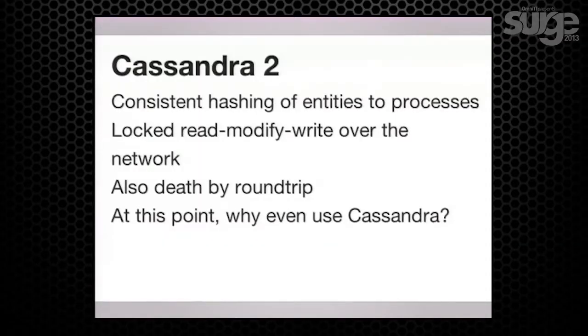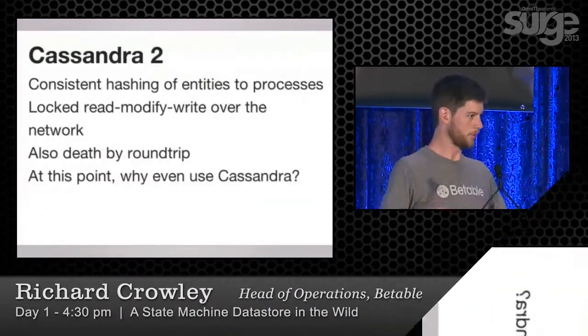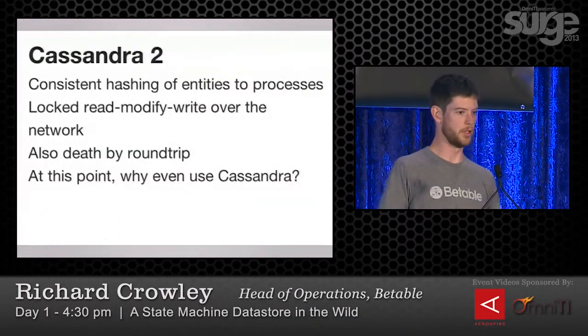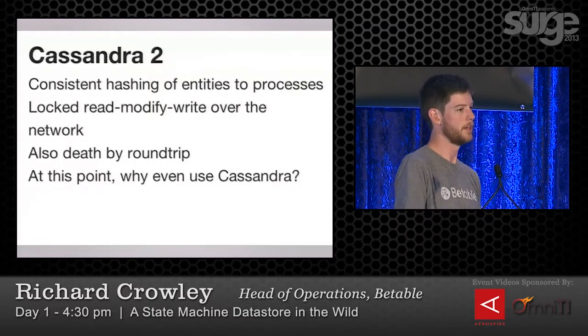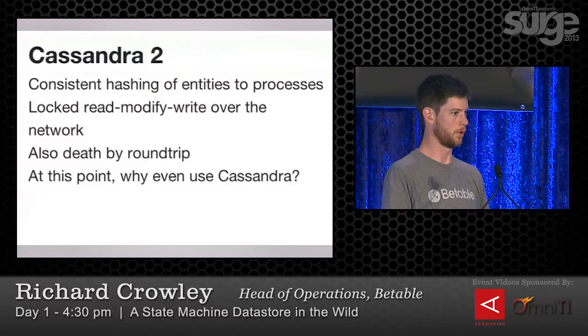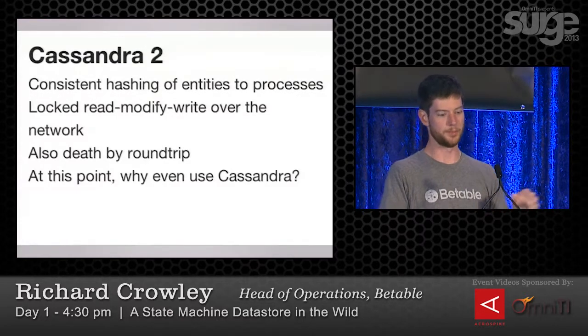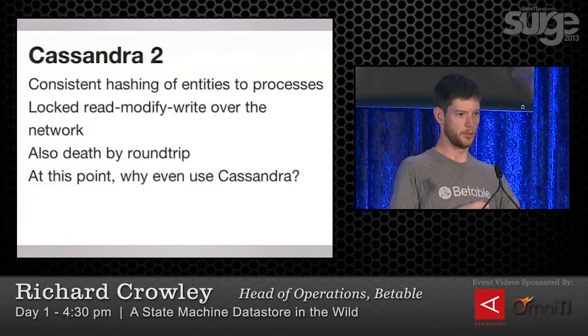We stepped back and still wanted to use Cassandra, so we went the pessimistic locking route. We built a service doing consistent hashing itself so we could lock around the update of an entity — read something from Cassandra, modify it in this coordinator service, then write it back. This worked, but we were still dealing with network round trips to Cassandra while locking around it. We had our serializability constraint, but we were serializing big network chunks, and that's not going to work well.